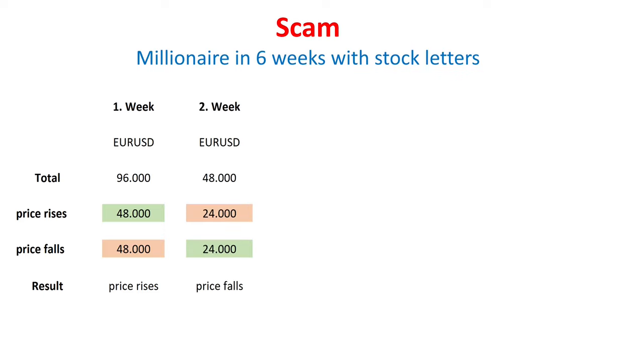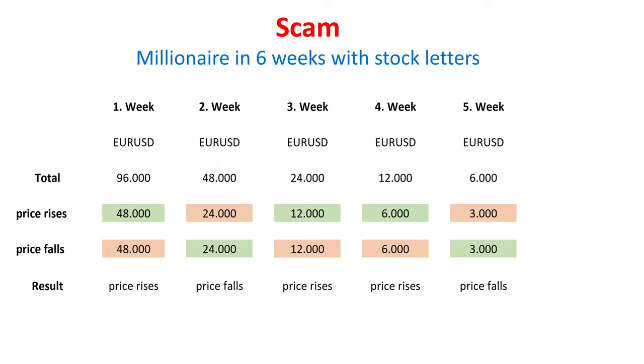In the second week the 48,000 emails were shared again, and this went on for a total of 5 weeks. In the end, there were 3,000 traders left who received correct price forecasts five times in a row. Incidentally, the chance that you are right five times in a row with a 50% probability is 3%. Now the fraudster tried to convince half of the 3,000 traders to pay 0.024 bitcoins for these correct price forecasts, and the fraudster could even have become a millionaire with it.